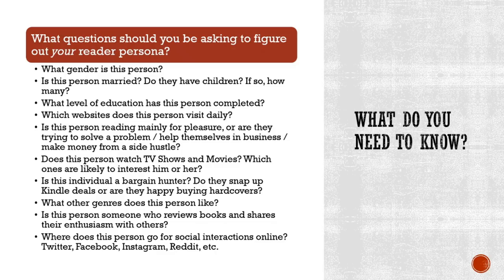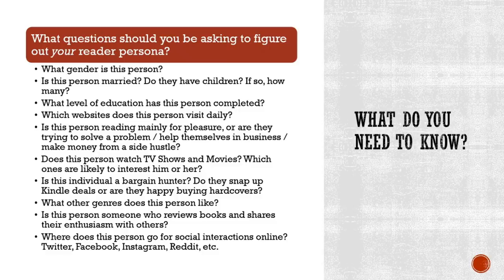What do you need to know? In putting together your reader persona there's a lot to consider. Review your research and look at correlations — are 89% of your audience female? Then your reader persona will be a woman. Ask yourself questions like: what is their gender, what level of education do they have, what websites do they visit, do they watch TV shows or movies and if so which ones, what other book genres do they like, where do they go for social interactions, are they somebody who reviews books or do they just read them, and if they do review, are they the kind of person who likes sharing their enthusiasm with others.